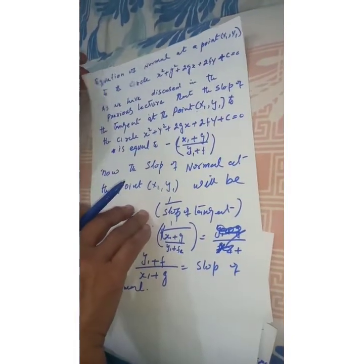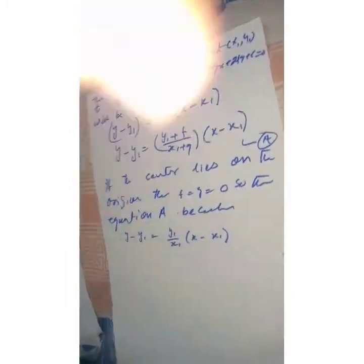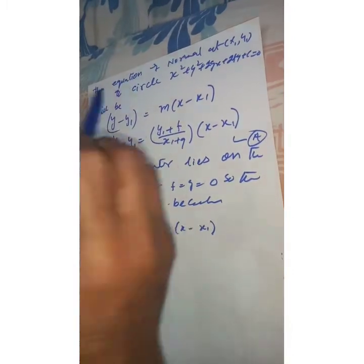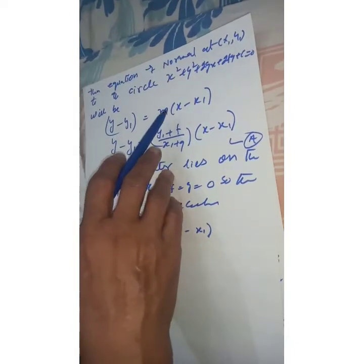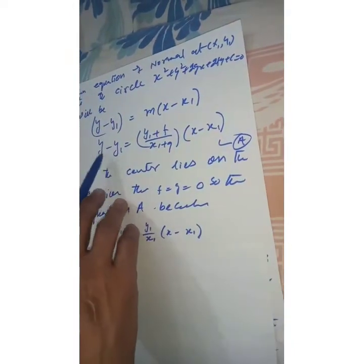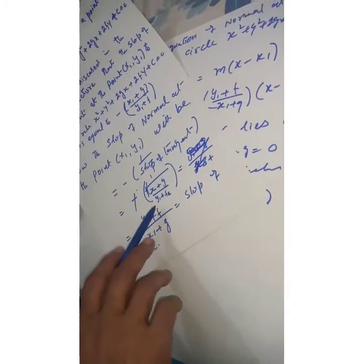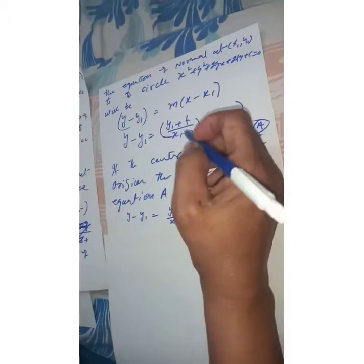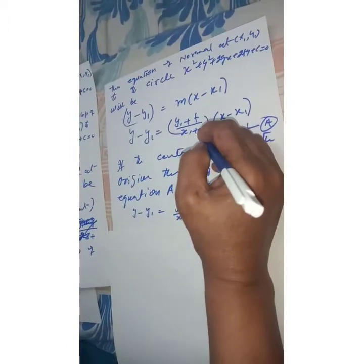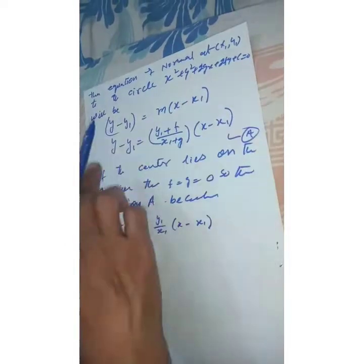Now we find the equation of normal at the point (x1, y1) to the circle. The equation of a straight line is y minus y1 = m(x minus x1). We substitute the value of m, the slope of normal which we just found, which is (y1+f) dividing by (x1+g) into this equation.